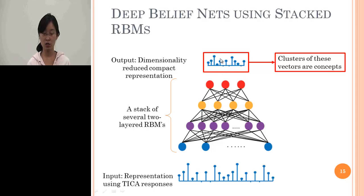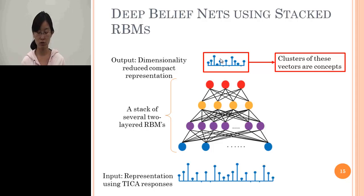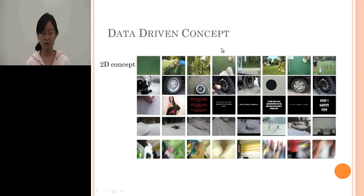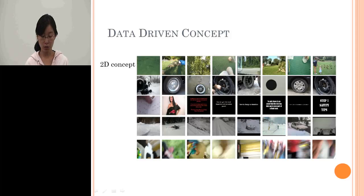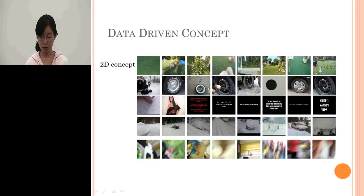We use this representation to cluster clips into different groups, each corresponding to different data-driven concepts. Here we show the data-driven scene concepts, where each row is a concept and we show the top eight candidates. Some are very meaningful, like the first row capturing outdoor green grass scenes. We also have trees as the second row. But some are really hard to interpret, like the last row where we cannot tell what the scene concept represents.